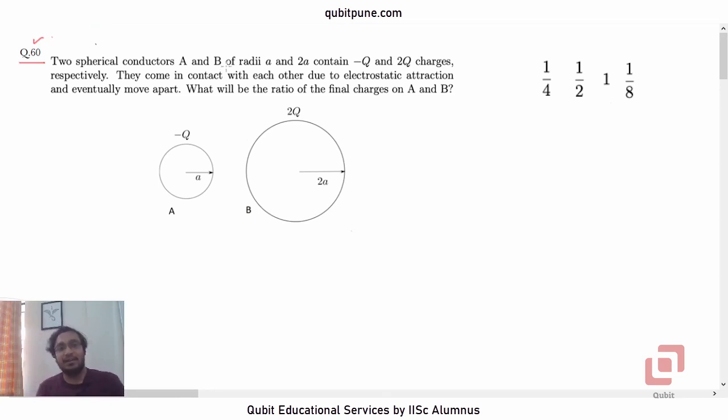Two spherical conductors A and B of radii A and 2A contain negative Q and 2Q charges respectively. They come in contact with each other due to electrostatic attraction, obviously because one of them is negative and the other one is positive, recharge and eventually move apart. What will be the ratio of the final charges on A and B? And we have options: 1/4, 1/2, 1, and 1/8.